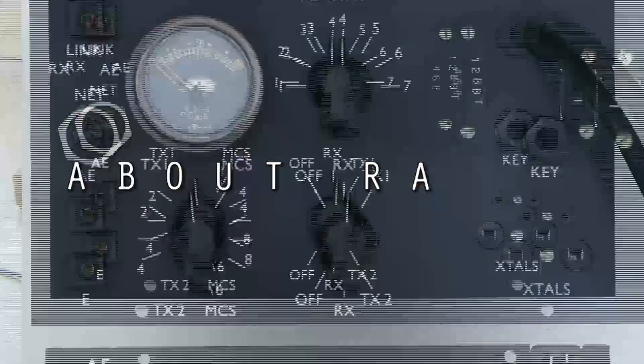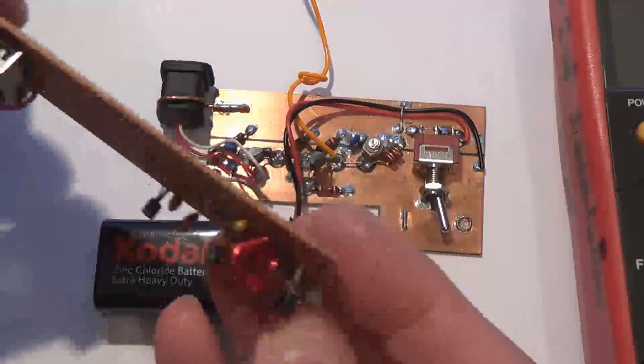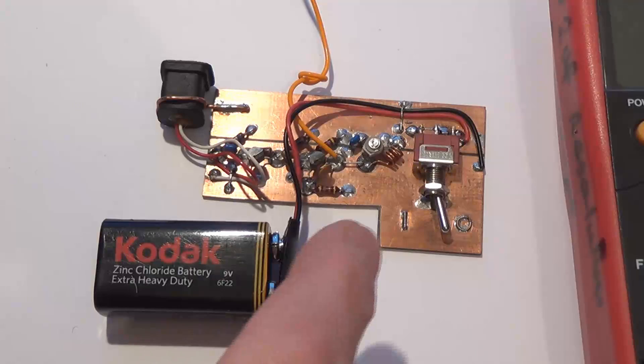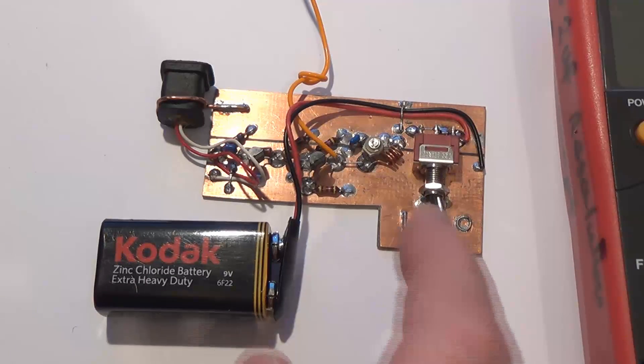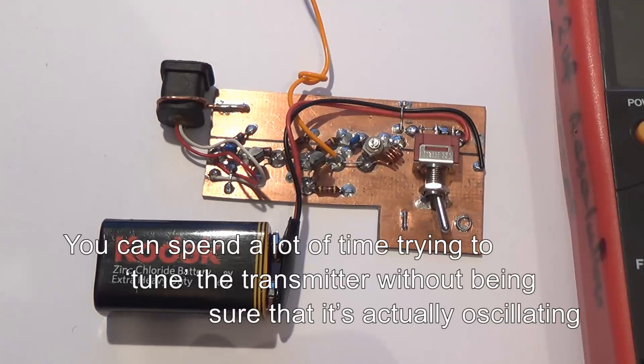Hi guys, if you build yourself a little VHF FM transmitter like this, the biggest problem you're likely to have is establishing the operating frequency. Before you get to that, you've got to establish that the transmitter is actually working, and that's difficult to do if you don't know the actual operating frequency. So you've got two things you're trying to work out: is it working and what frequency is it working on?